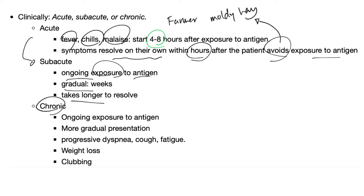Chronic hypersensitivity pneumonitis involves ongoing exposure to the antigen for an even longer period of time with a more gradual presentation. You have progressive dyspnea, cough, and fatigue, as well as weight loss and clubbing.